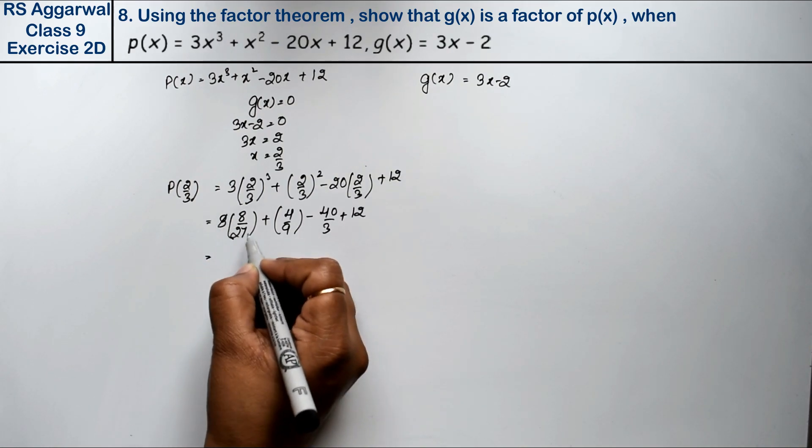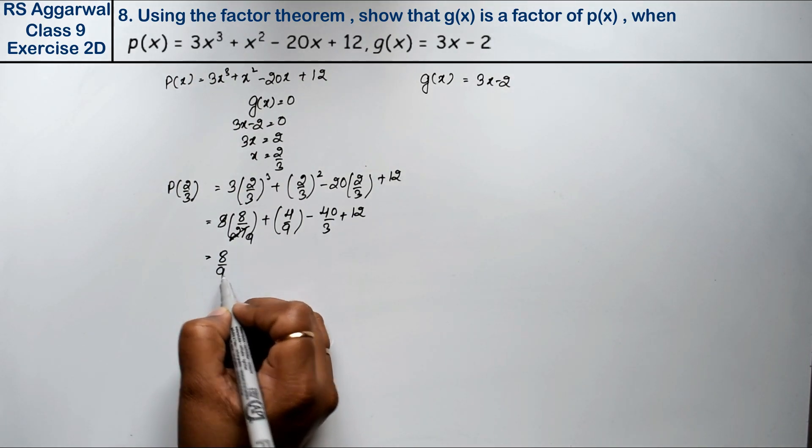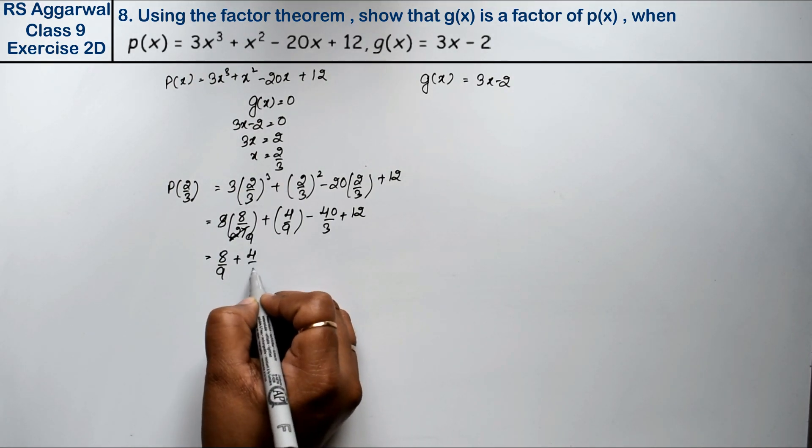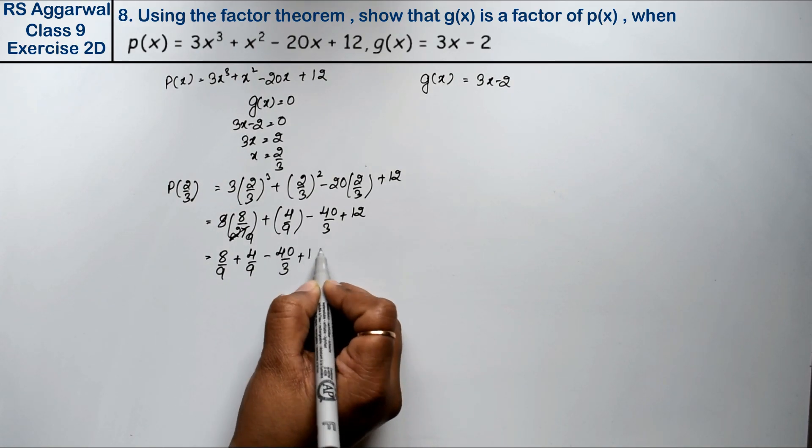So 3 into 9 is 27. We get 8/9 + 4/9 - 40/3 + 12.